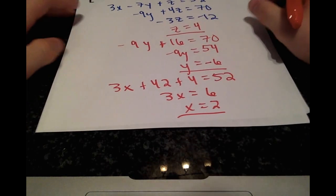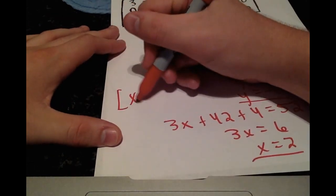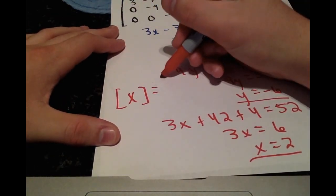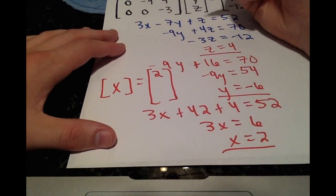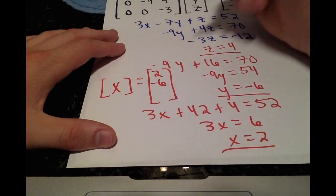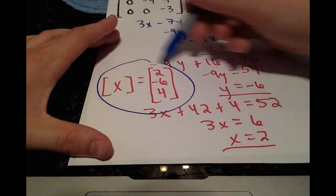And we have found our solution vector. We can write it all together. Our x, y, and z terms. We got 2, negative 6, and 4. So that is our final answer.